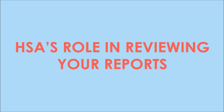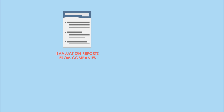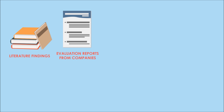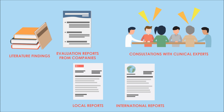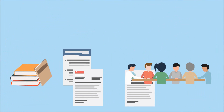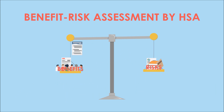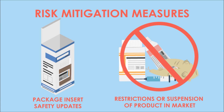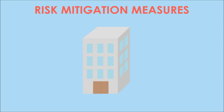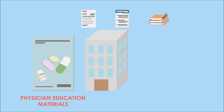After successfully submitting your AE report, it will be analysed along with other reports in HSA's safety database. HSA reviews AE reports based on the expectedness of the AE in relation to the known safety profile of the product, the incidence of AEs reported locally or internationally, as well as advice from clinical experts. When a potential safety signal is detected, a benefit-risk assessment is conducted. The outcome may result in risk mitigation measures, including updates to the package insert, restrictions on use, or even suspension of the product if the risks outweigh the benefits. Other measures may include the development and distribution of educational materials such as physician education materials or patient medication guides.